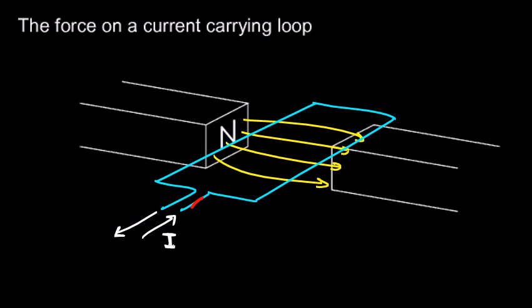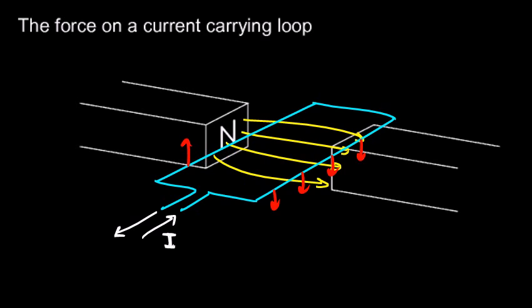The current flows around the loop. While the current goes down one side of the wire, it moves across the magnetic field in one direction; while it moves down the other side, it moves in the opposite direction. So it experiences forces in opposite directions — downward on one side and upward on the other. That tends to cause the loop to twist and rotate, producing a torque.